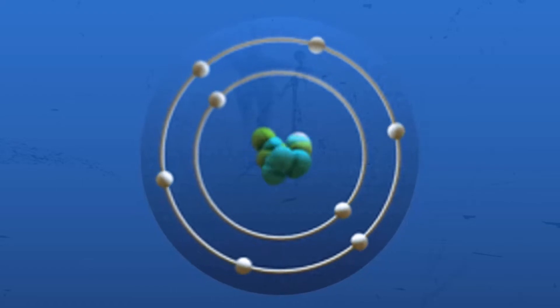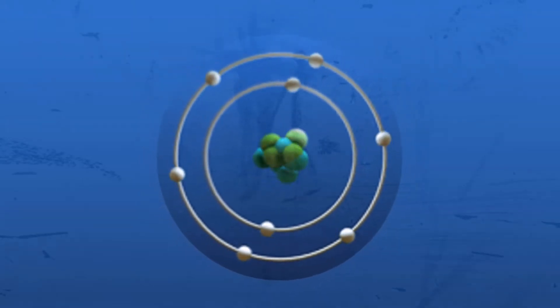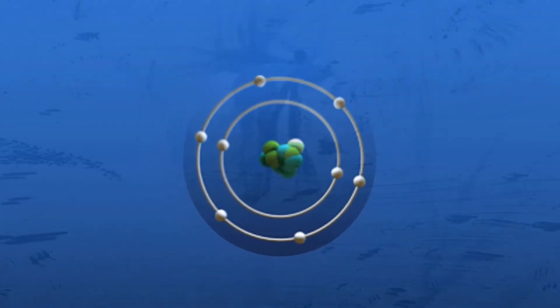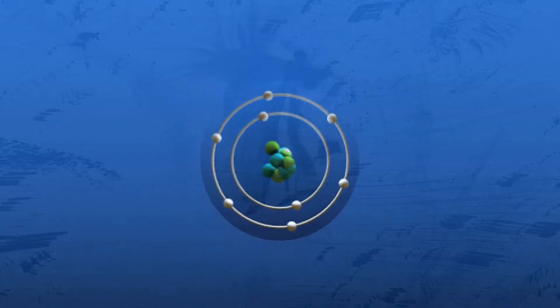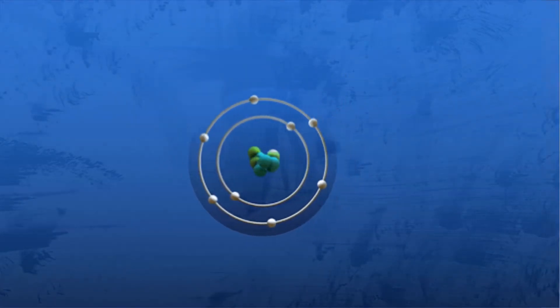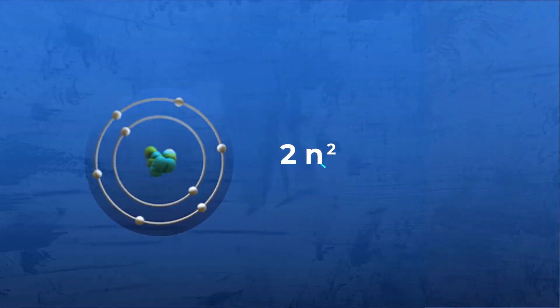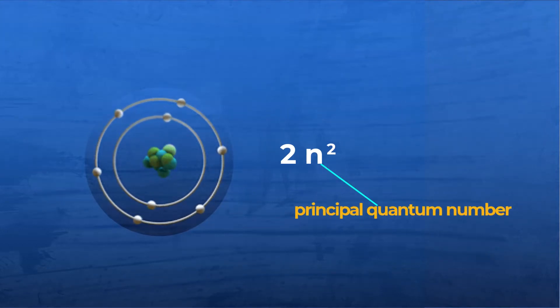To know the total number of electrons that this shell could house, we use the following general formula that helps us compute the total number of electrons a shell can contain. Using the formula 2N², where N represents the principal quantum number.